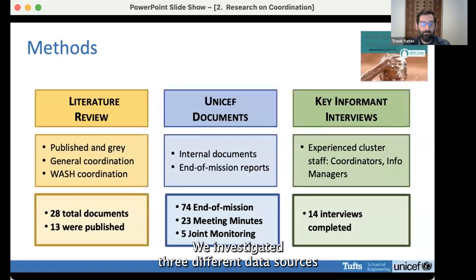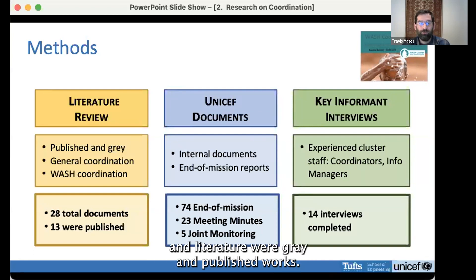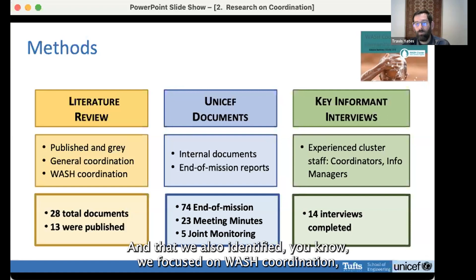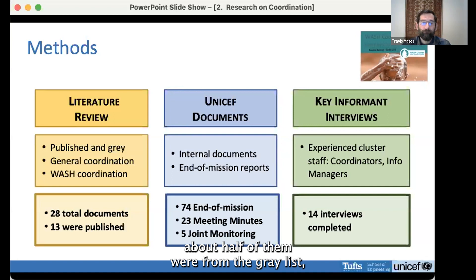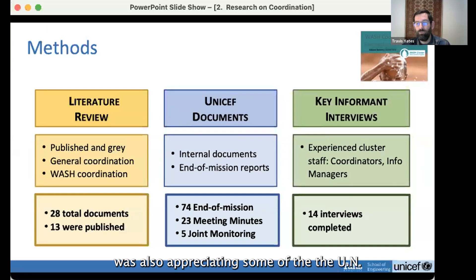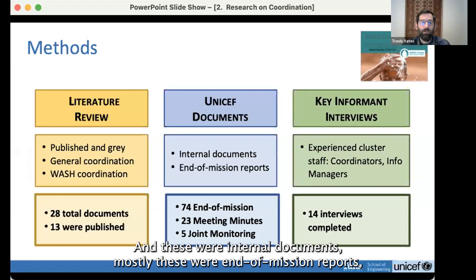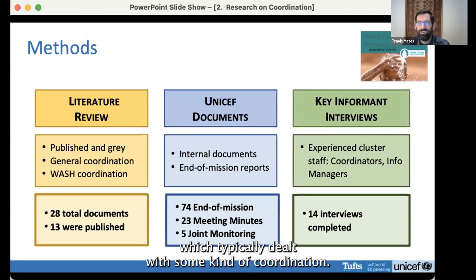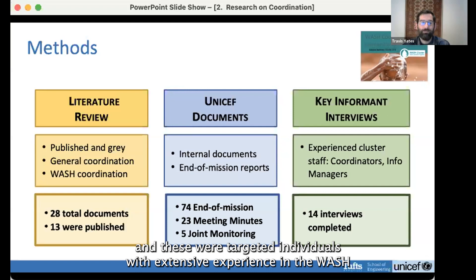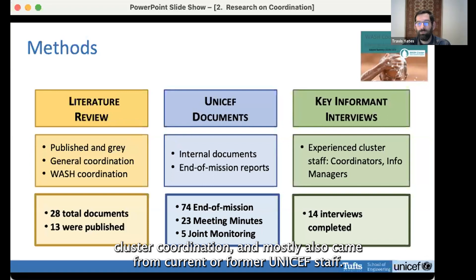We investigated three different data sources using qualitative approaches. The literature review included both gray and published works, focused on WASH coordination but also general coordination documents from different sectors — we identified 28 documents, about half from gray literature. The second source was internal documents from the Global WASH cluster or UNICEF, mostly end-of-mission reports from field support teams dealing with coordination. Third were key informant interviews with targeted individuals with extensive experience in WASH cluster coordination, mostly current or former UNICEF staff.